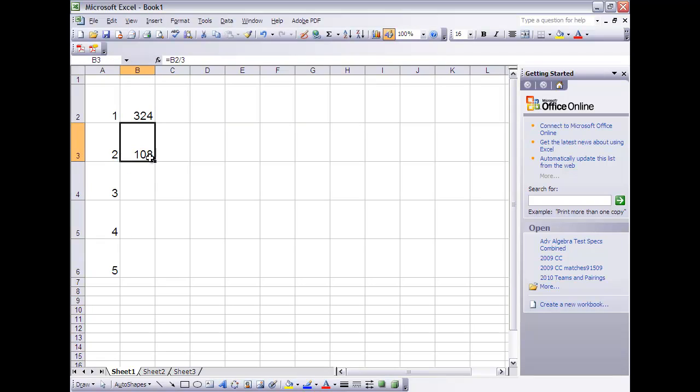Now if I just fill down—so if I grab the corner and pull down to 5—it will do the same thing for each of those. So you'll notice that the formula is always the previous term divided by 3.